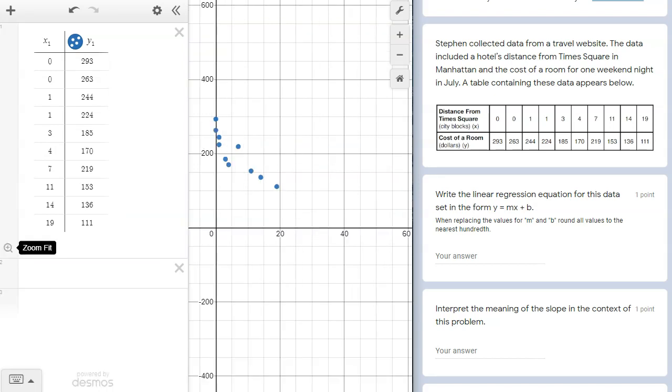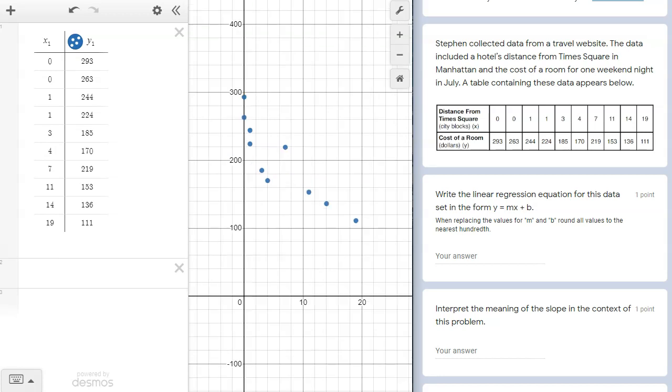The next thing I'm going to do is zoom fit my data to visualize the scatter plot. I do that by tapping the magnifying glass below the table to the left.